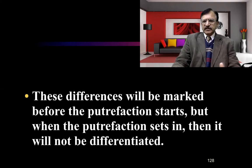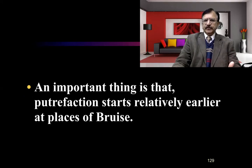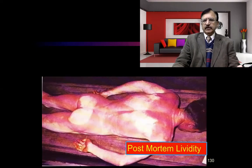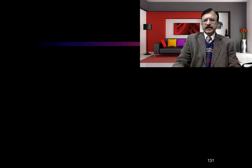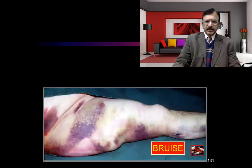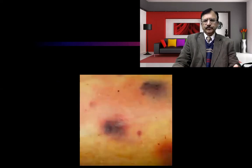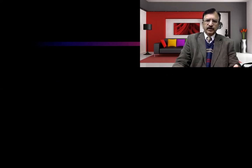The differences will be marked before putrefaction starts, but once putrefaction sets in they cannot be differentiated. Importantly, putrefaction starts relatively earlier at places where there is bruise. This is post-mortem lividity, and this is a picture of bruise — it can be anywhere at the site of trauma and shows variegation of colors.